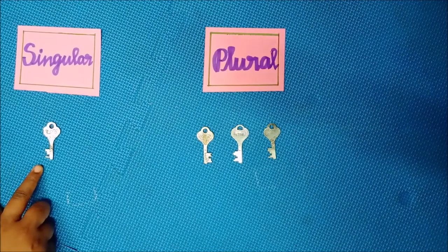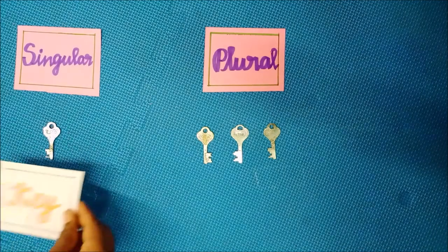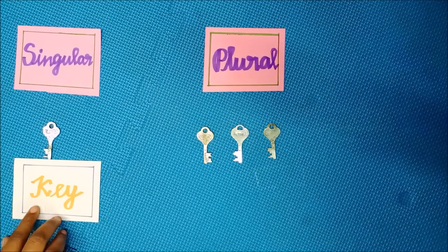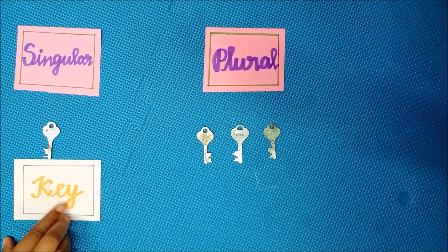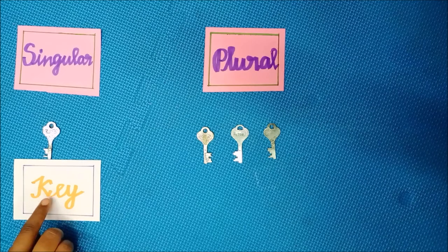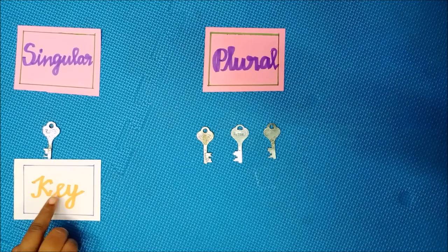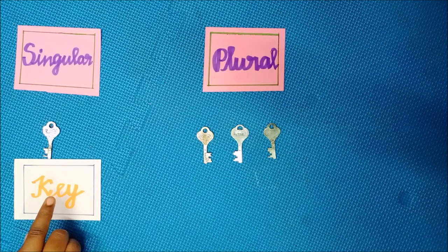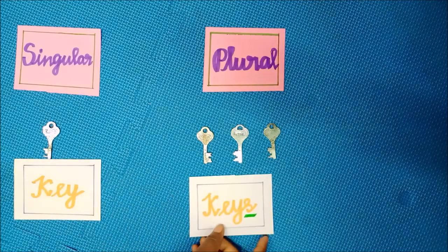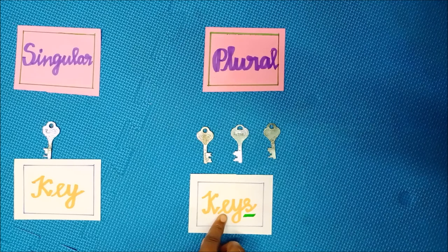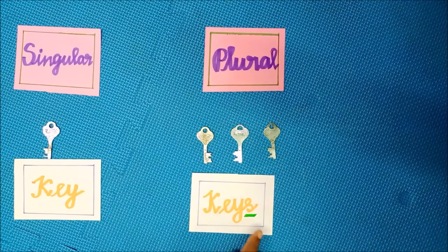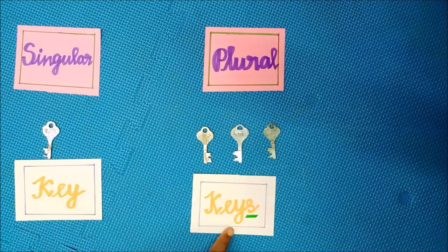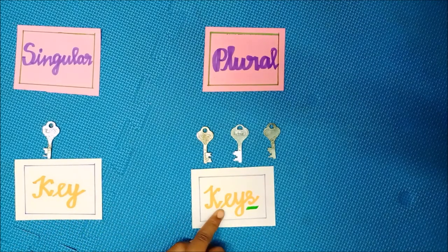It is a key — K-E-Y. Key ends with Y, and the letter before Y is E, which is a vowel. If the letter before Y is a vowel, just add S — do not add IES. So key→keys.